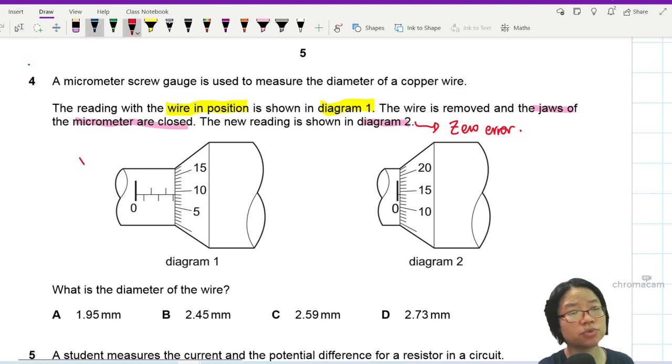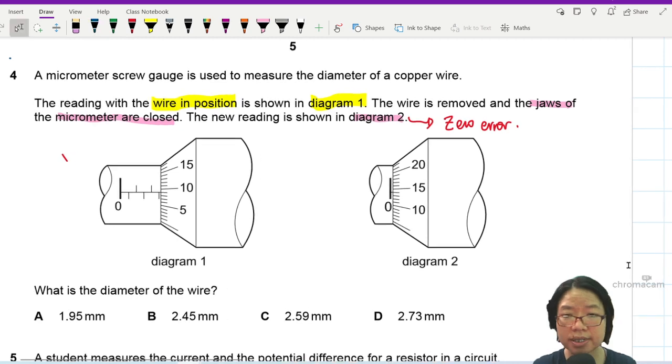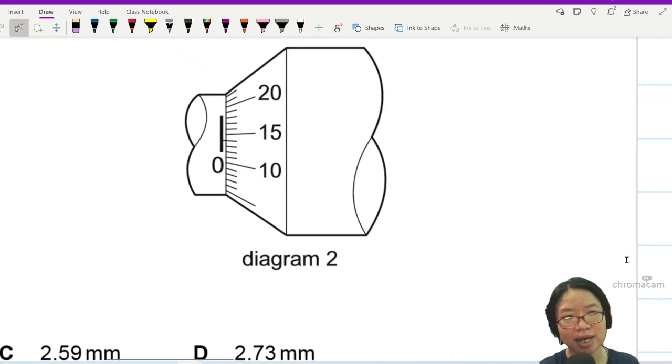Now if you look at this reading, this reading looks like... Let me zoom in a bit. You see this one? It touches this line here. Touches the line here. So since it touches this line, this one looks like 14.